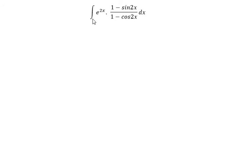We have the integral of e to the power of 2x multiplied with 1 minus sin 2x over 1 minus cos 2x dx. So now I will show you the technique how to answer the question.